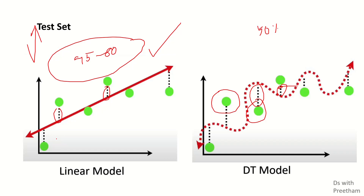So the decision tree model on train data gives 100% accuracy but on test data only around 50 to 60%. For the linear model the assumption gives a general 75 to 80% on both test and train. That is type 1 error — training 100% performance and test very low performance. And that is type 2 error.